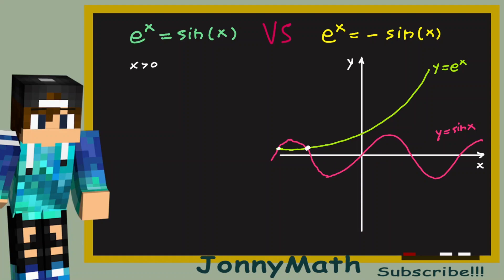Firstly let's consider when x is greater than zero. As you can see e to the x is never equal to sine of x, so there's no solution to the equation when x is greater than zero. But when x is smaller than zero the equation e to the x equals sine of x has an infinite amount of solutions.